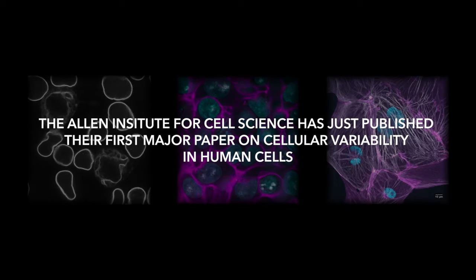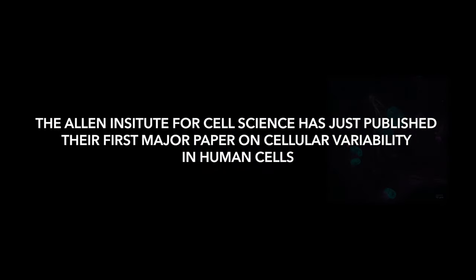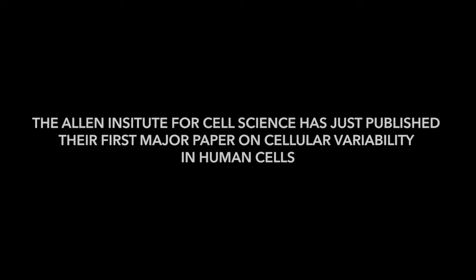Cells at any moment in time have a bunch of parts. They have certain proteins. Which proteins are expressed are really important for determining, for example, what a cell is doing or what kind of cell you have. But what's also really important is how those proteins and all those pieces are arranged together.